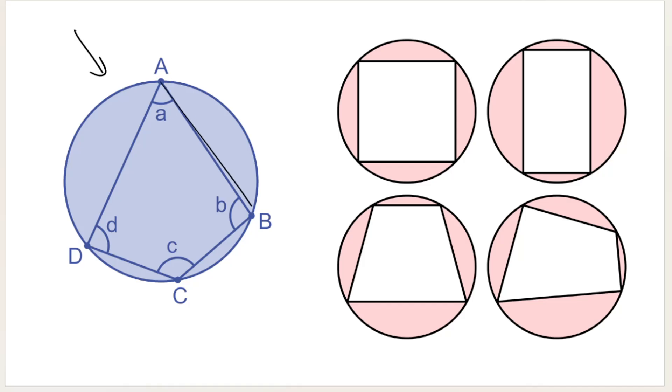It's got four sides: AB, BC, CD, and AD—four sides, and all of the corners lie on the circumference.